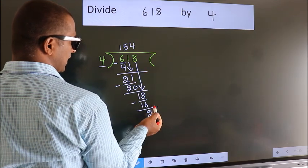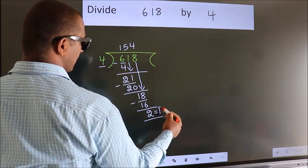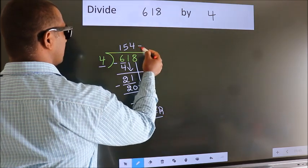No more numbers to bring it down. So we stop here. This is our remainder. This is our quotient.